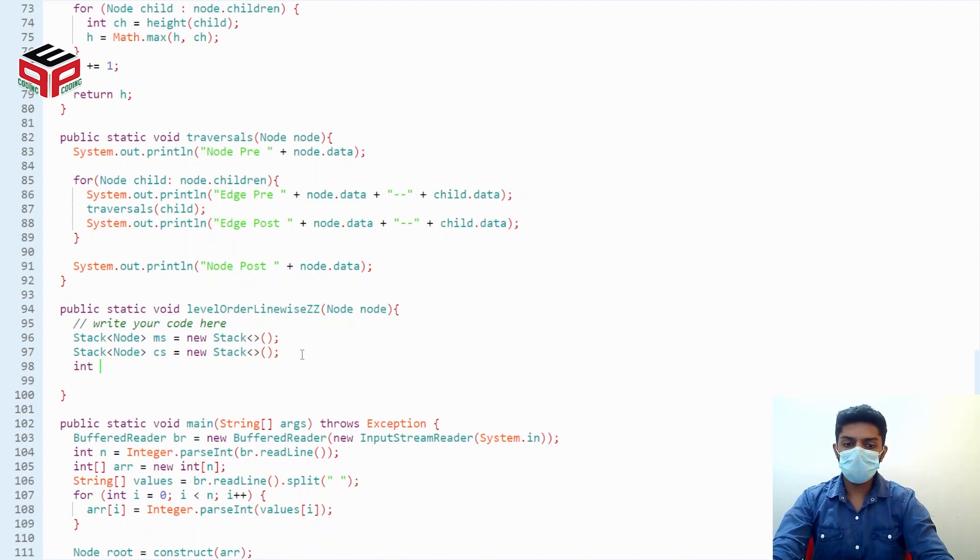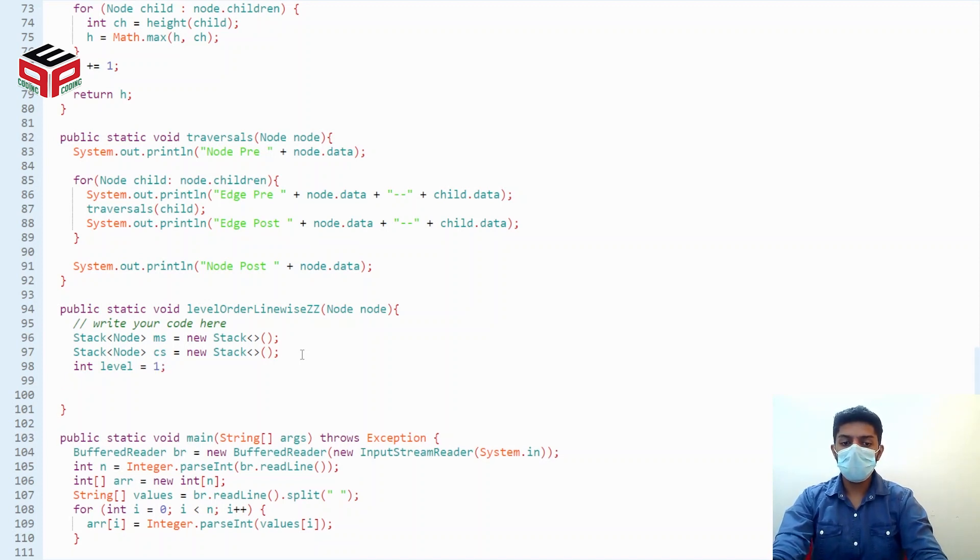Also I'll be adding one more stack called the child stack. Let's initialize a variable called level which will actually be changing as the main stack becomes empty. So let's keep it to one for now. Also the first step is ms.push the root node which is by the name node.